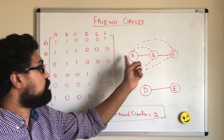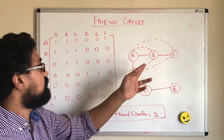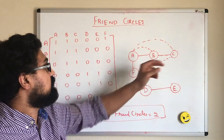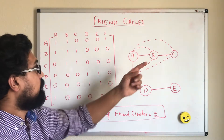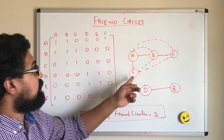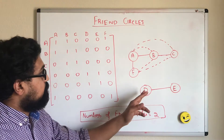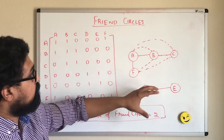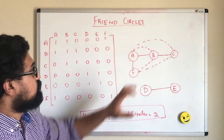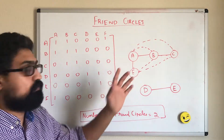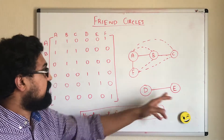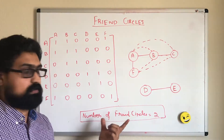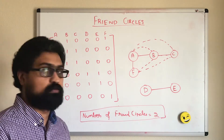Person A is indirect friends with C via B. Person B is friends with A and C by direct friendship, and he is indirectly friend with F via A. Person C is friends with B and is indirect friends with A and F. People D and E are friends with each other and they are different from this group. So A, B, C and F form one friend circle, and D and E form another friend circle. So we have to find the total number of friend circles — the expected output is two.